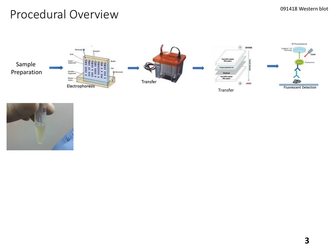Now let's talk about the procedural overview to get that Western blot. This is a long process and I'm going to break it down into four main steps. You should know each of the steps, and there will be a more detailed video about each one. The first step is sample preparation — this is basically when we make something called a cell lysate.